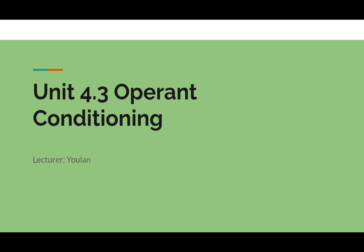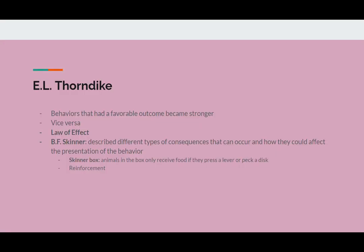Operant conditioning refers to when behavior leads to an environmental response, which affects the likelihood of the behavior happening again. One of the earliest contributors to this aspect of learning was E.L. Thorndike, who found that behaviors that had a favorable outcome became stronger. Vice versa, behaviors that had an unfavorable outcome became weaker. He referred to this as his law of effect.